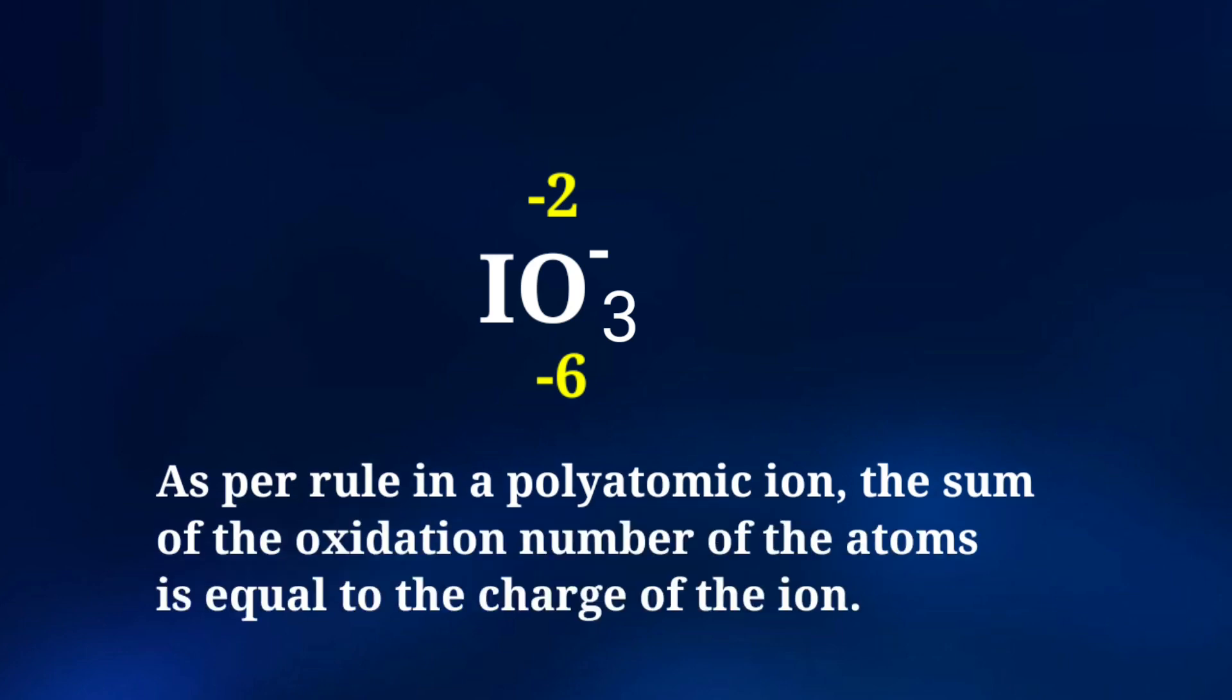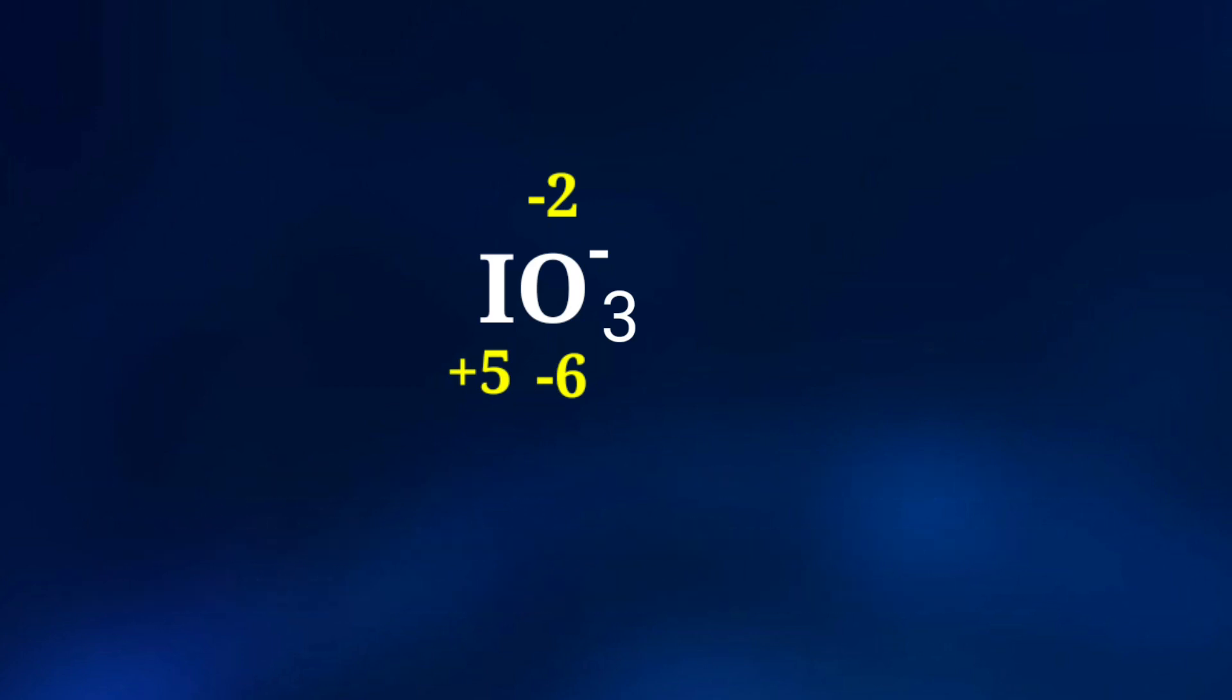As per rule in a polyatomic ion, the sum of the oxidation number of the atoms is equal to the charge of the ion. So the number under I must be plus 5. So we can write the oxidation number of iodine is plus 5.